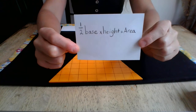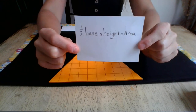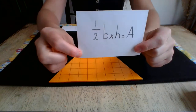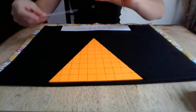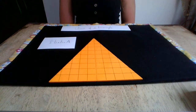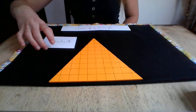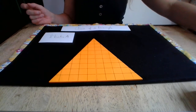Half of base times height equals the area of a triangle. So those are the three ways that we can find the area of a triangle.